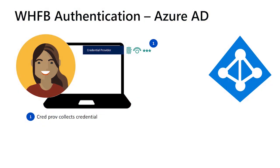Sure. Almost all authentication scenarios in Windows start with a credential provider, and Windows Hello for Business is no different. On the lock screen, credential providers are represented by small square icons showing the user their available authentication options. In the case of Windows Hello for Business, credential providers will be used to collect the user's PIN, face, or fingerprint. When a user provides their gesture to the appropriate credential provider, it will verify that the gesture matches one registered by the user.